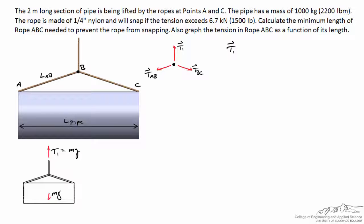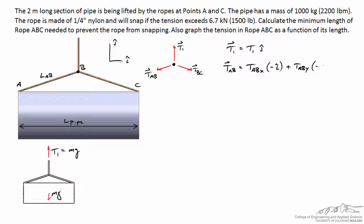To analyze this problem we need to break each vector into component form. For T1, the vertical component acts in the J-hat direction. With coordinate axes where I-hat points right and J-hat points vertically, vector TAB can be broken into its components: TABX acts to the left in the negative I-hat direction, and TABY acts downward in the negative J-hat direction.